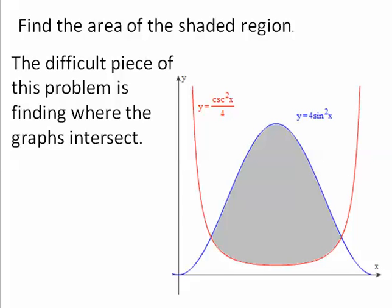The shaded region is between y equals 4 sine squared x and y equals cosine squared x divided by 4. The difficult piece of this problem is finding where the graphs intersect.